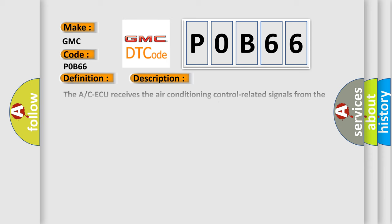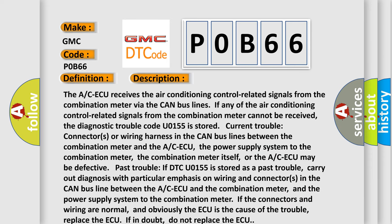The ACAQ receives air conditioning control related signals from the combination meter via the CAN bus lines. If any of those signals from the combination meter cannot be received, the diagnostic trouble code U0155 is stored. Current trouble: check connectors or wiring harness in the CAN bus lines between the combination meter and the ACAQ. The power supply system to the combination meter, the combination meter itself, or the ACAQ may be defective. Past trouble: if DTC U0155 is stored as a past trouble, carry out diagnosis with particular emphasis on wiring and connectors in the CAN bus line between the ACAQ and the combination meter, and the power supply system to the combination meter. If the connectors and wiring are normal and the ACAQ is clearly the cause of the trouble, replace the ACAQ. If in doubt, do not replace the ACAQ.